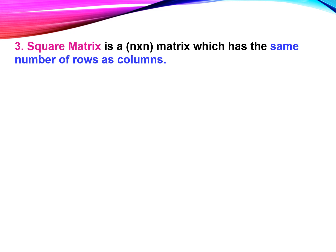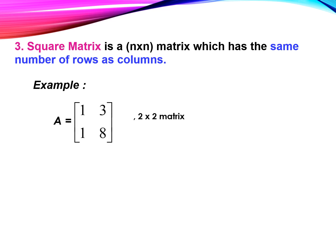Number three, square matrix. A square matrix is a matrix which has the same number of rows and columns. For example, matrix A is a 2 by 2 matrix, and matrix B is a 3 by 3 matrix.